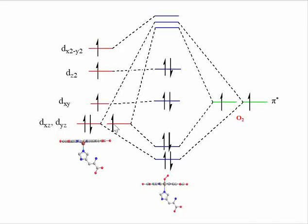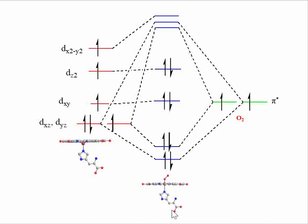This is the molecular orbital diagram of the deoxy and oxyforms. In the deoxyform you can see 4 unpaired electrons with configuration T2G4 EG2. In the oxyform, all electrons are paired — 2 electrons from O2 and 6 electrons from the deoxyform combine. This molecular orbital diagram differentiates between the deoxyform and oxyform of myoglobin and hemoglobin. This concludes the differences between the deoxy and oxyforms of myoglobin and hemoglobin.